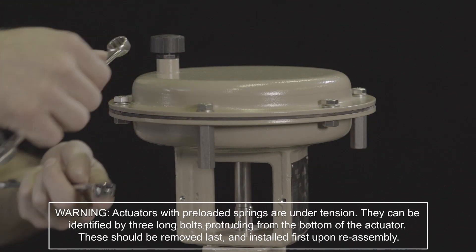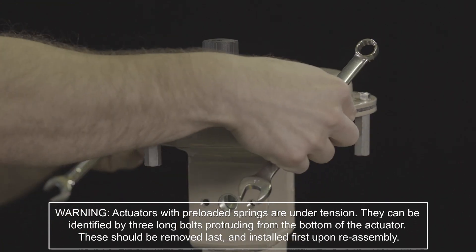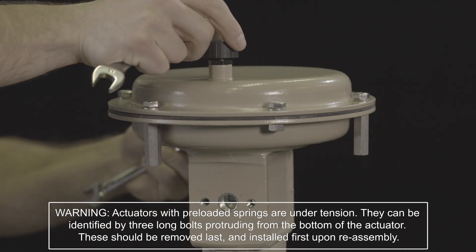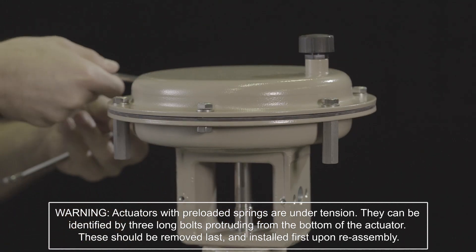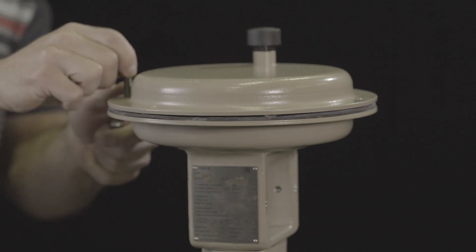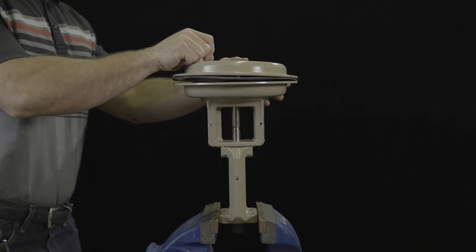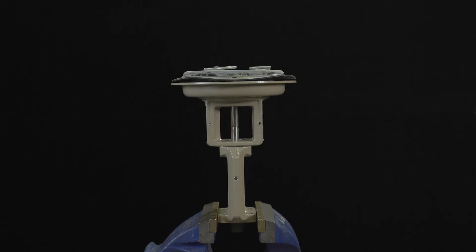With the actuator removed from the valve, unscrew the nuts and bolts on the diaphragm case. Lift off the top diaphragm case and remove springs.